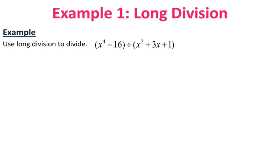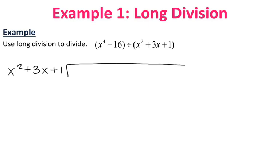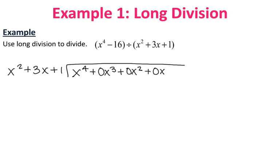So long division — you did this back in elementary school when you were dividing numbers, and we're going to use a very similar concept except with polynomials. The second polynomial goes on the outside: x squared plus 3x plus 1, dividing into x to the fourth minus 16. You need all of the terms in between, so I'll put in zero x cubed, zero x squared, and zero x as placeholders. You need every single term between your starting term and your constant whenever you're doing long division or synthetic division.